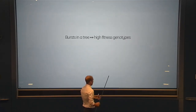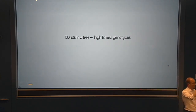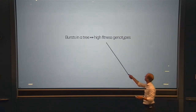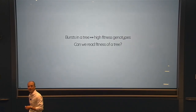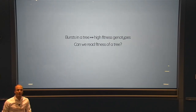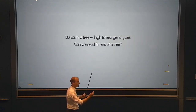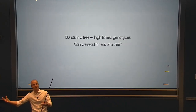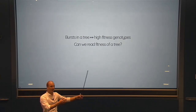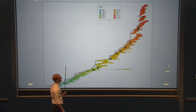This brings me to the last part of the talk. I've argued that bursts in the phylogenetic tree correspond to individuals that transiently run ahead of the pack with high fitness. If that's true, can we use this to turn it around and, given a tree, read fitness off it? Can we say which individuals are fit and are going to take over? This would be quite useful in the context of influenza.